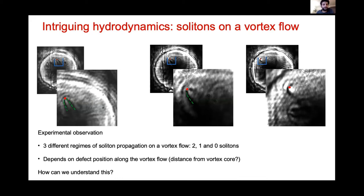Let me show you some screenshots of this experiment. In one regime, I zoom in and we have two solitons — the solitons don't propagate exactly straight. In another regime, when the defect marked by the red dot has moved a little bit across the vortex, we have only one soliton. And in yet another regime, when the defect has moved further out, there is no more soliton — just some density dip but not a soliton.